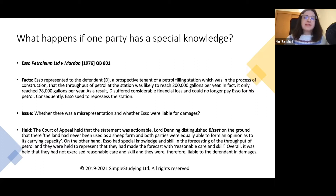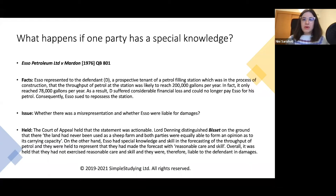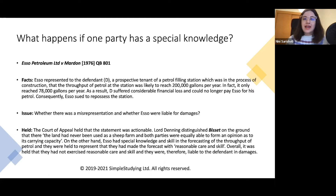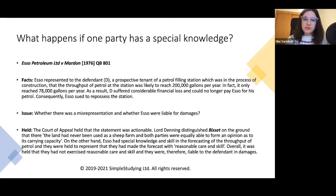Esso Petroleum was a company that had special knowledge — very technical knowledge — about what the contract concerned, specifically how many gallons the station would produce. This was technical knowledge that Esso Petroleum had, whereas the other party, Marden, did not have the same level of knowledge. When the court saw that one party had special knowledge and had induced the other party, Marden, to enter into the contract, it was argued that this was an actionable misrepresentation.